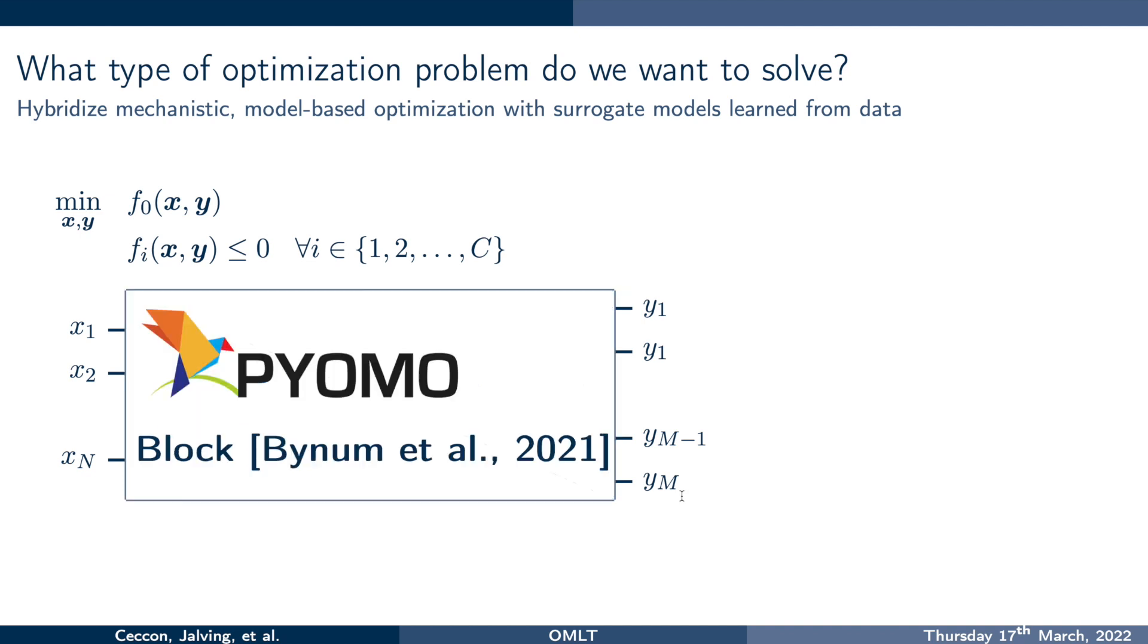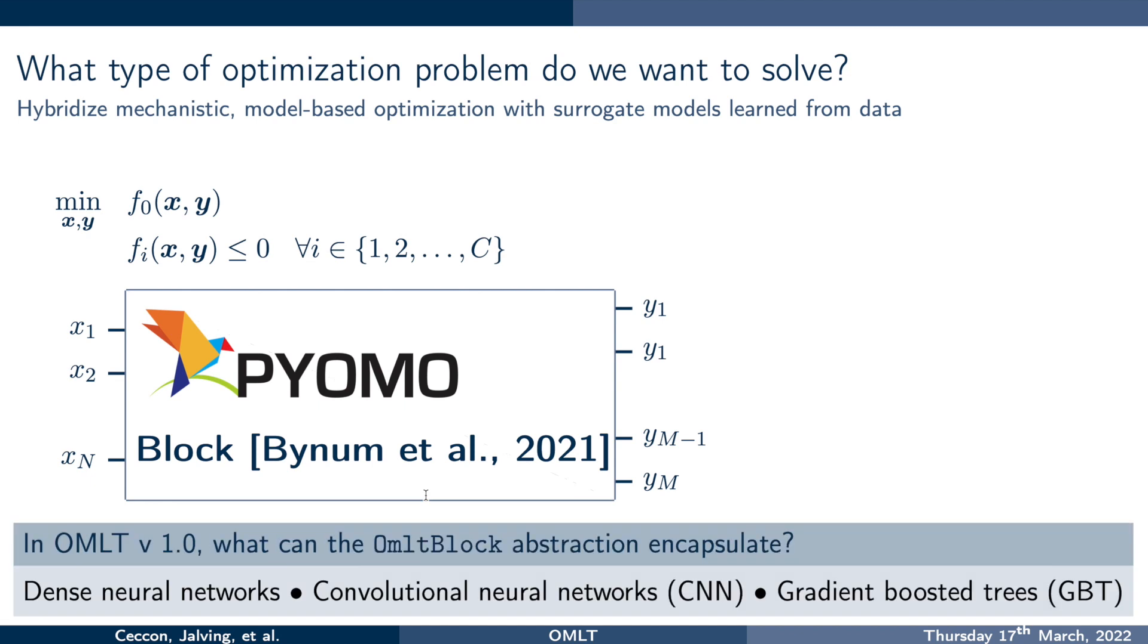So for instance, we have our inputs x into an already trained machine learning problem, and we have our outputs y out of an already trained machine learning model. What I would like to do is have these inputs and these outputs basically available to me as variables in my optimization problem so that I can work with them as much as I may wish. Now this is exactly what Omelette does. Omelette uses the Pyomo abstraction that's called a block.